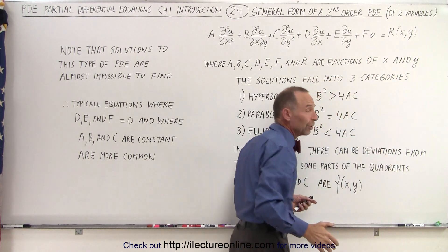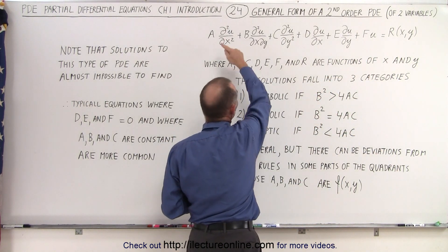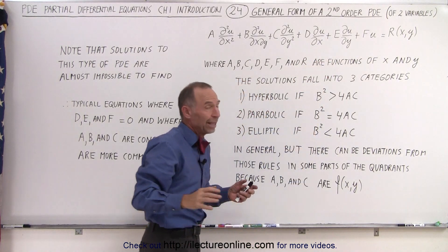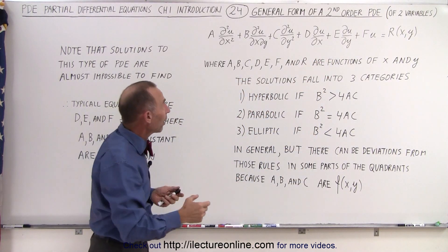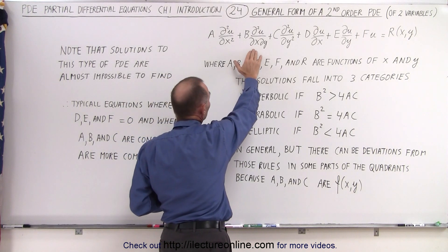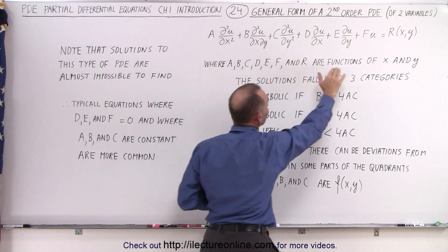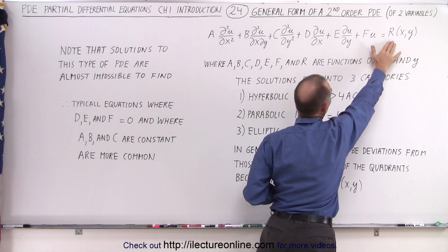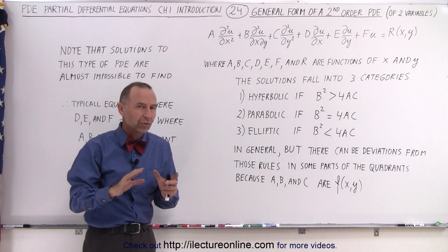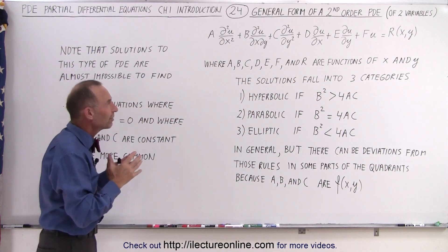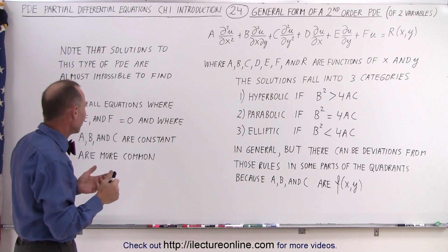And quite often R will be zero as well. That only leaves you with three terms equal to zero, which would then be much, much easier to solve. Quite often the B term also goes to zero, and we only have an A and a C term — either one is zero, or it's a function of X and Y. So those are typically the more common types of second-order differential equations we're going to find.